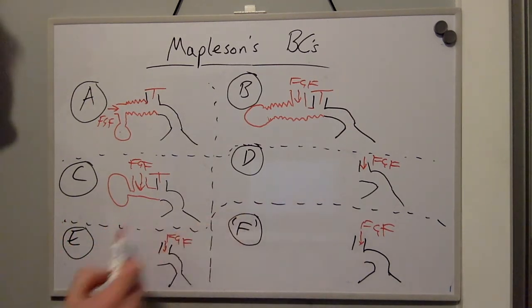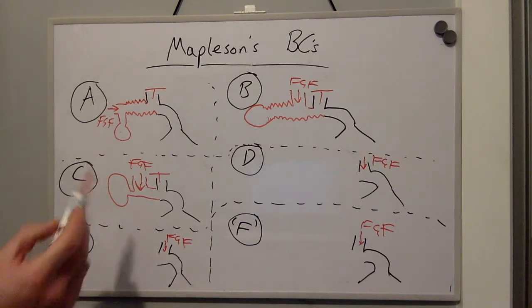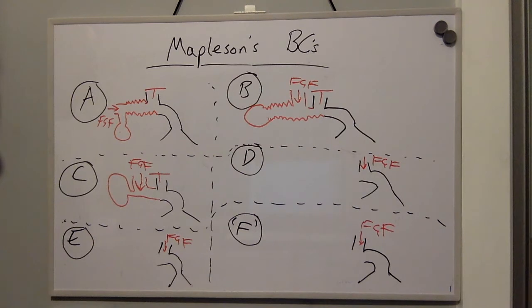Mapleson D, E and F can be described as T piece breathing circuits. It's also worth noting that Mapleson A or the LAC system is good for spontaneously ventilating patients.